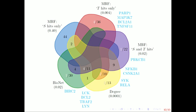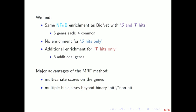This is the figure from the paper, I've just added a bunch more stuff to the Venn diagram, but the actual conclusion is, I've already told you this, it's that we found the same NF-kappa-B enrichment for, as Bionet did, with that hit label that corresponded to what Bionet was doing.